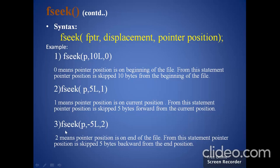The third example is: fseek(p, -5l, 2); Here, p is the name of the file pointer. On the pointer position, we put 2, which means the pointer position is at the end of the file. The effect of -5l is that the pointer position is skipped 5 bytes backward from the end. Due to the negative sign, this backward action takes place.